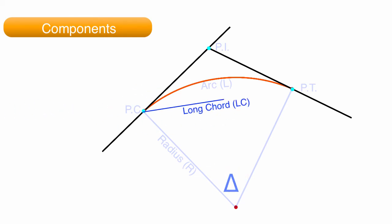The long cord distance is the straight line distance between the PC and the PT. The external distance is the shortest distance between the arc and PI.